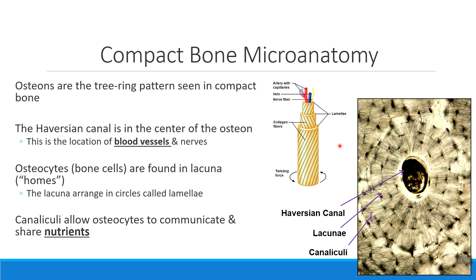So compact bone tissue — thing number one to make sure we know: we have these things called osteons. In the center of the osteon, my blood vessels and my nerves, and all of my little bone cells, the osteocytes, living in circles around it.